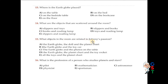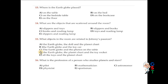Question number 15: What objects in the room are related to Johnny's passion? The doll is not related. The toy car is not related. The earth globe, the planet chart, and the toy rocket are all related to Johnny's passion for astronomy. D is correct — the earth globe, the planet chart, and the toy rocket are all related to his passion.